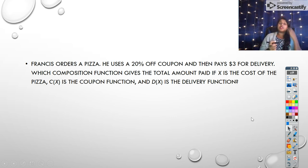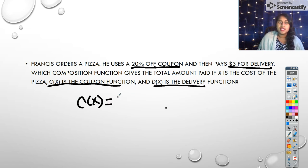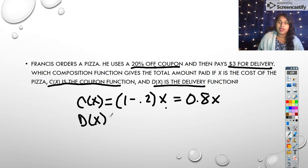Okay, here we have another real-world composition. Very first thing you're supposed to do is find the equation. So Francis orders a pizza. He uses a 20% off coupon. Ooh, that looks important to me. And then he pays $3 for delivery. And then it even gave me what my coupon and delivery function are called. So the very first thing I'm going to do is declare those. My coupon is 20% off. So that tells me I'm really looking at 1 minus 0.2 times x. Or that's the same as saying 0.8x. My delivery price is going to be plus 3, whatever the original price is. So x plus 3.